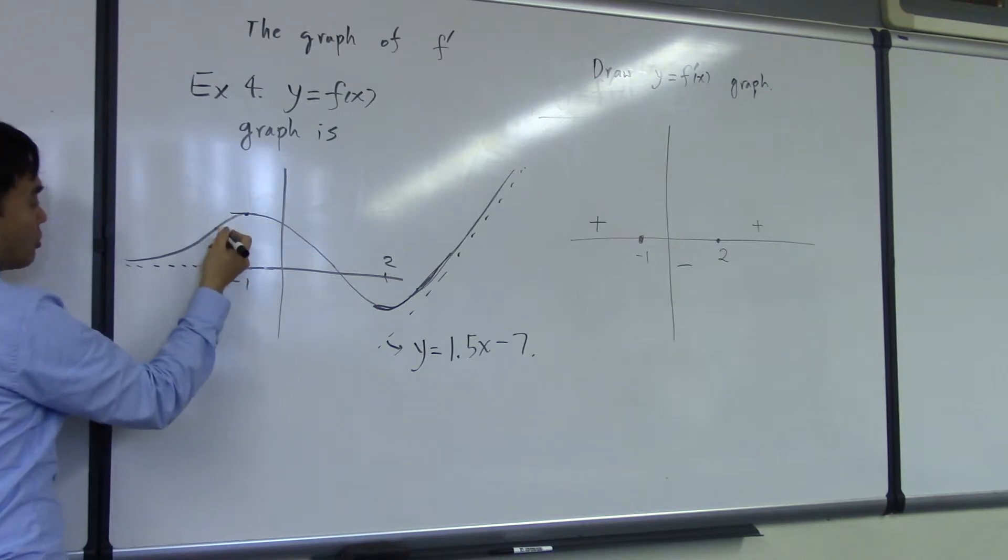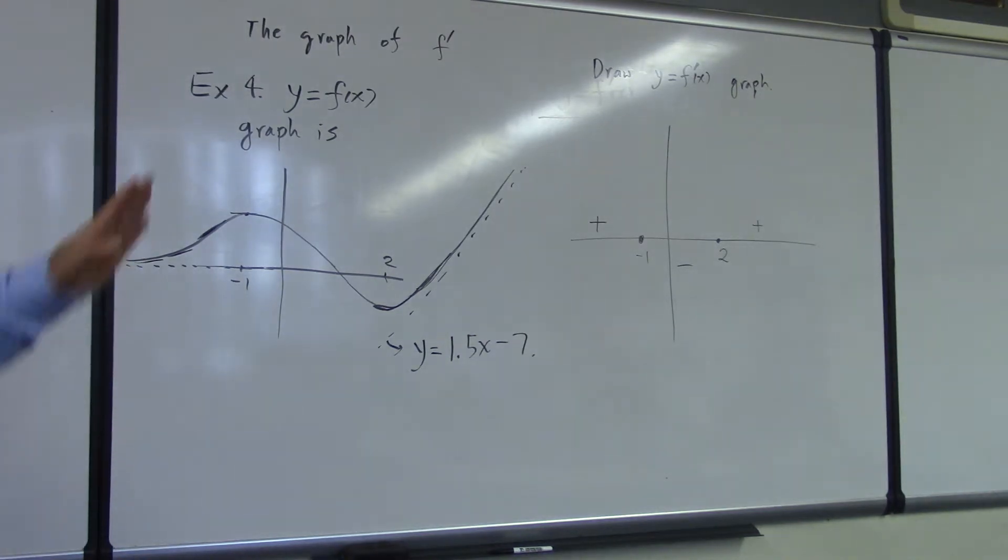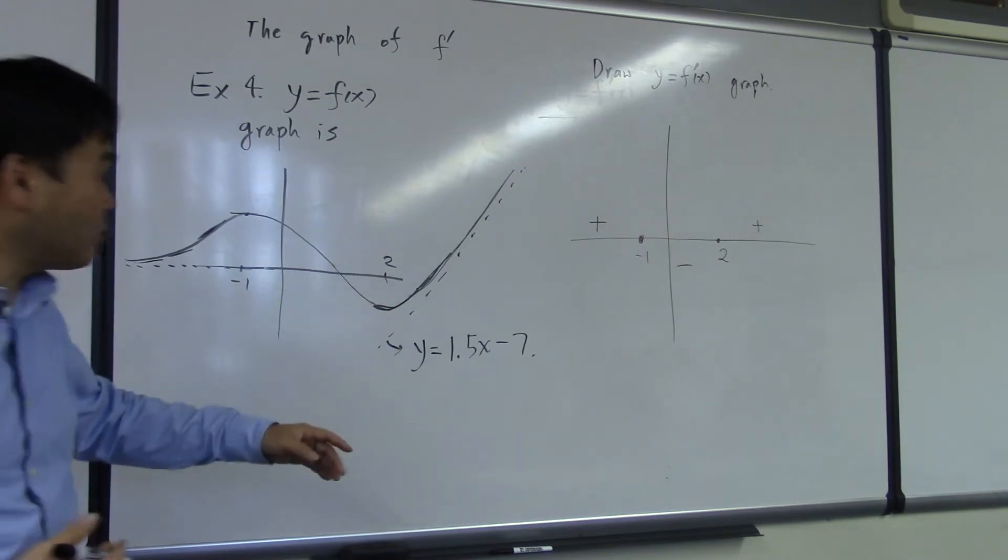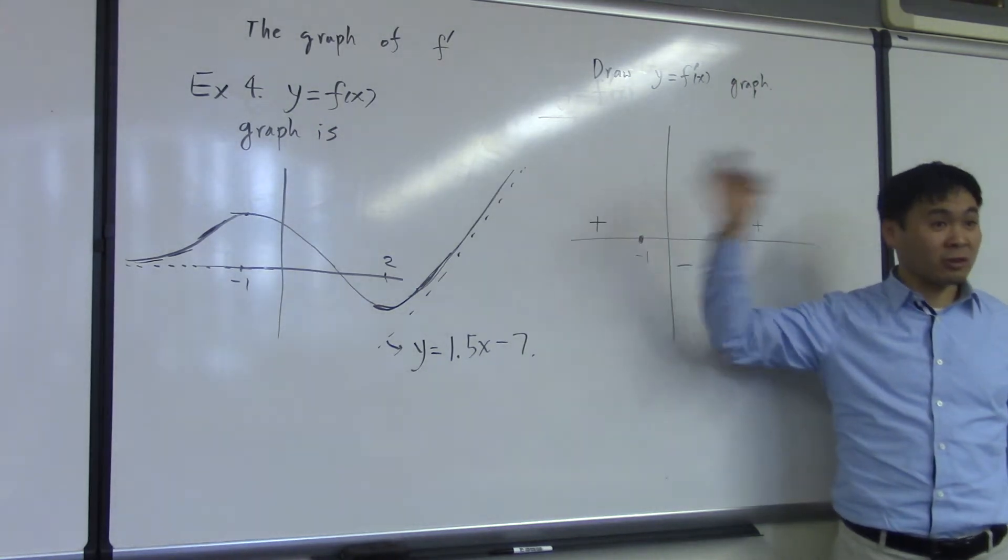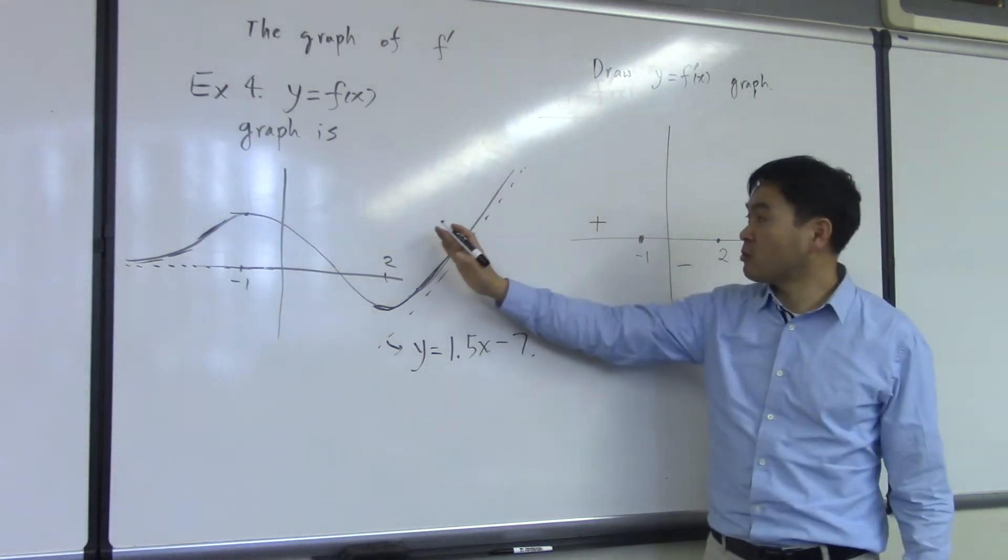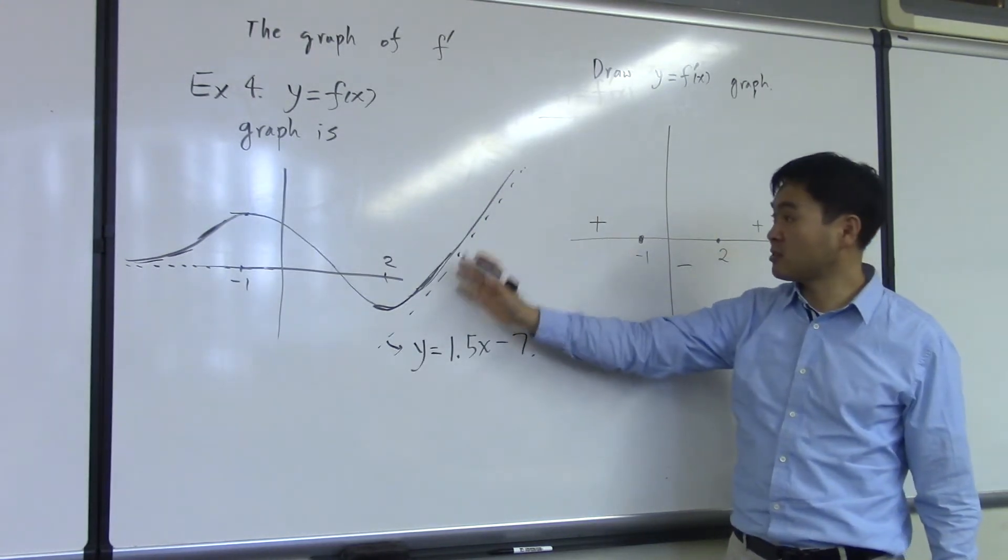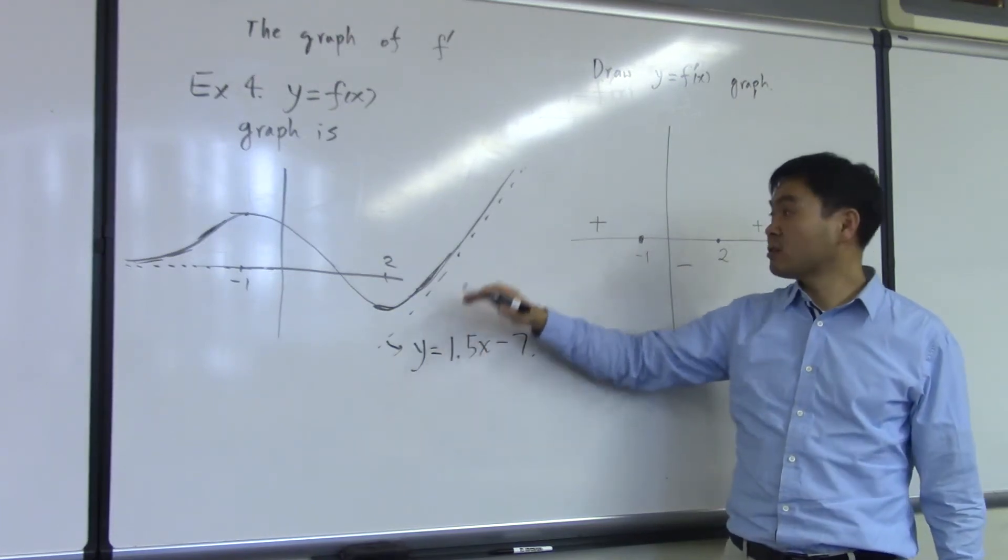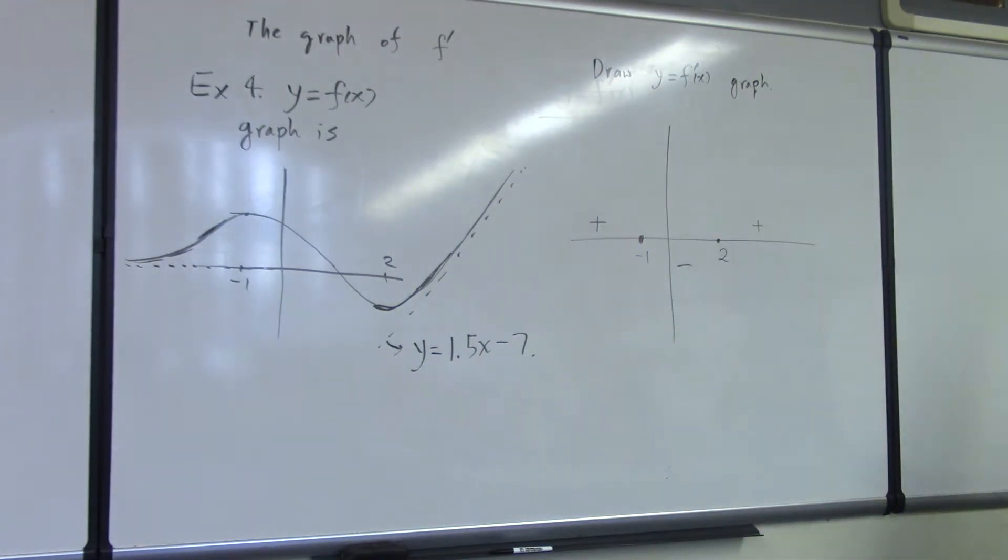So the slope is zero here. Slope is a positive slope here. What happens to the slope as you go left? The slope becomes more horizontal, right? Horizontal slope is what? Zero. So as you go further left, it should become closer and closer to zero. What about when you go further right? It gets closer and closer to this curve here, this line here. What's the slope of this line? 1.5. So the value of the slope should get closer and closer to 1.5, right?